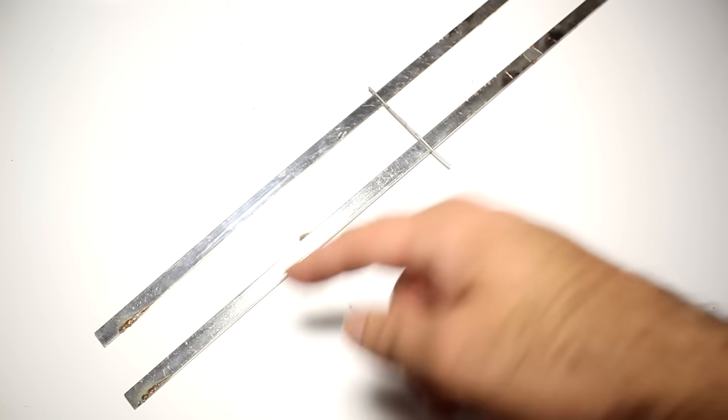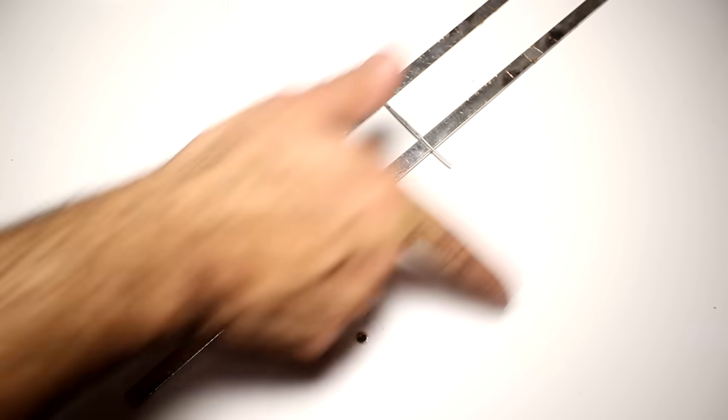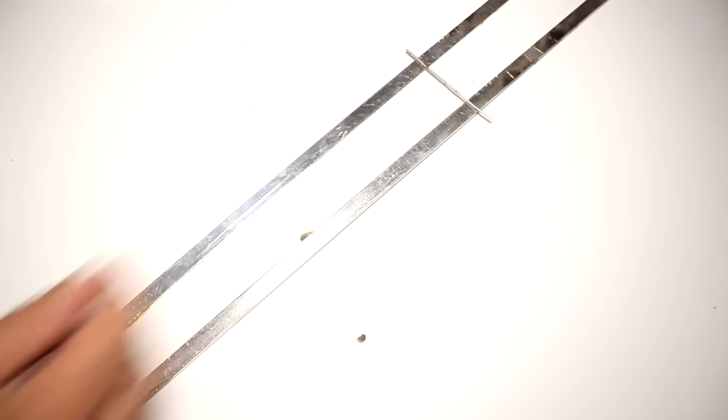Now if we flip the direction of the current, the direction of the field also flips, which means the force is still pointing the same way. So the projectile is always going out of the loop. That's why it also works with AC.